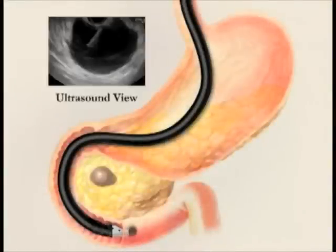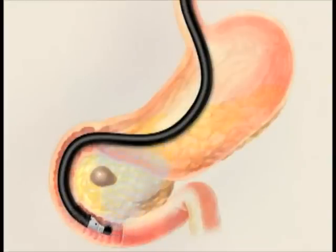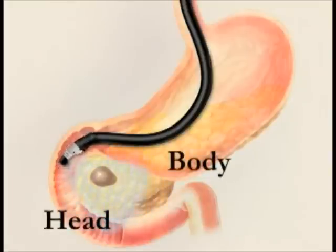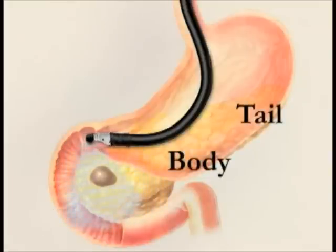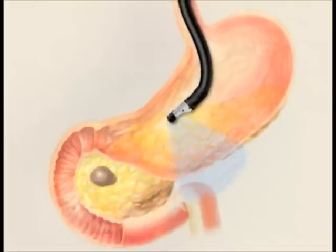In the ultrasound view, sound waves are passed through the lining of the stomach and into the pancreas to generate a clear image of the pancreas. The ultrasound probe is then withdrawn towards the stomach and moves along to examine the head, body, and tail of the pancreas for possible cysts.